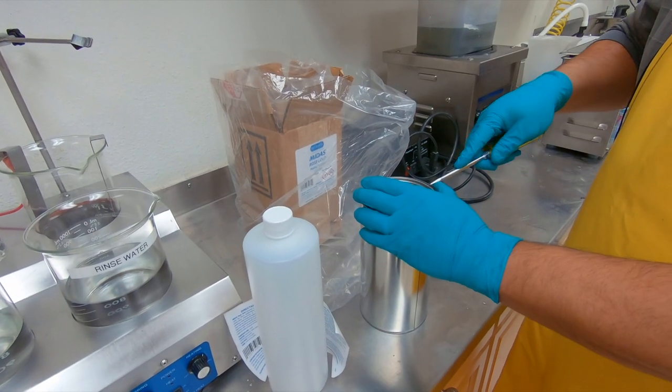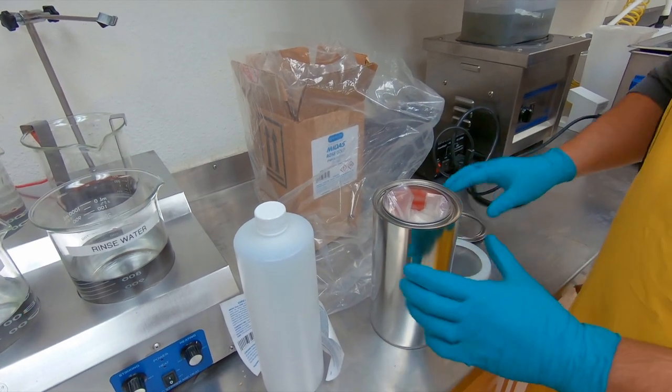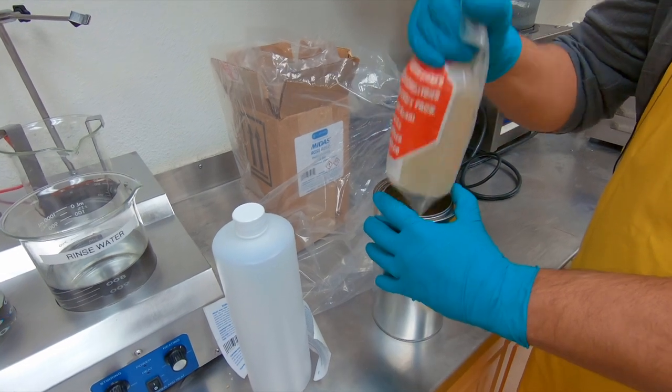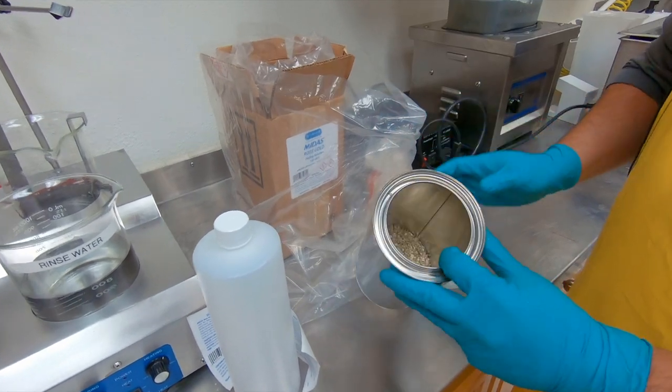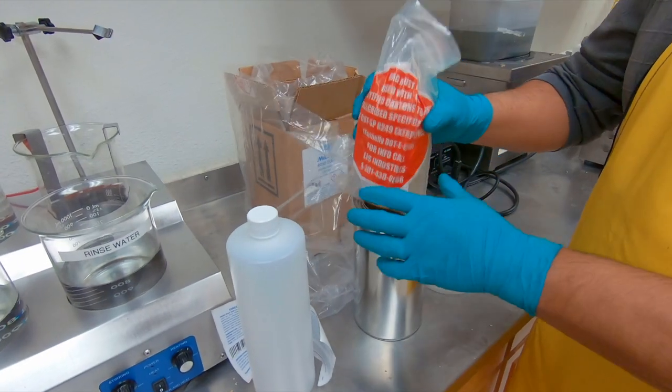You will need a flathead screwdriver to open the can. And this is the concentrate solution. Inside we have vermiculite to capture any spills. Now let's go ahead and get it mixed up.